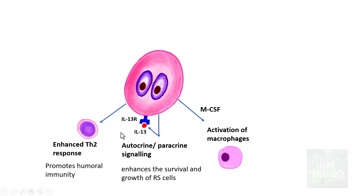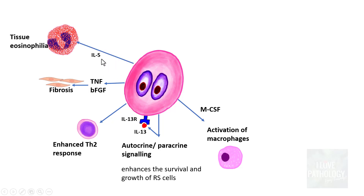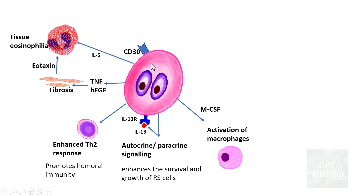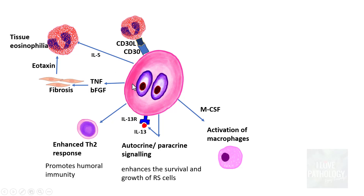RS cells secrete tumor necrosis factor (TNF) and basic fibroblast growth factor (bFGF), resulting in fibrosis. The most important cytokine produced is interleukin-5, which recruits large numbers of eosinophils, leading to tissue eosinophilia. The fibrosis also produces eotaxin, which further increases eosinophil recruitment. Reed-Sternberg cells express CD30, and the ligand for CD30 is present on eosinophils; this CD30–CD30L interaction enhances the survival and growth of Reed-Sternberg cells.